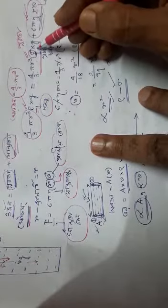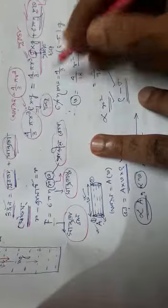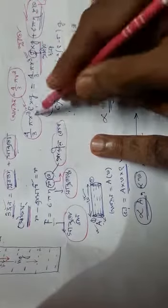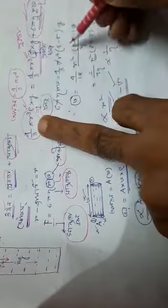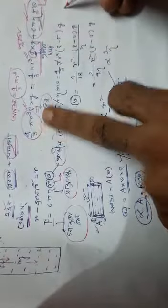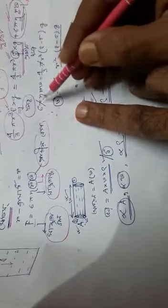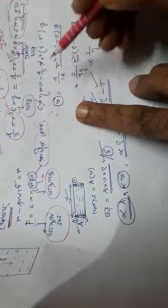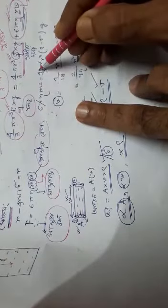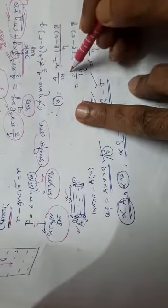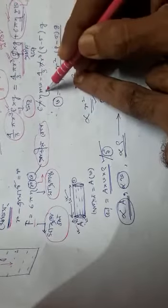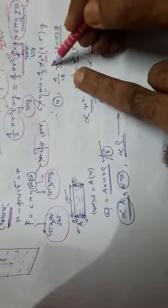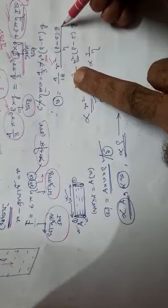If we look at 4 pi r b, we look at 4 pi r c. We look at rho minus sigma g r c. We look at 2 r c by 9 eta into rho minus sigma g.